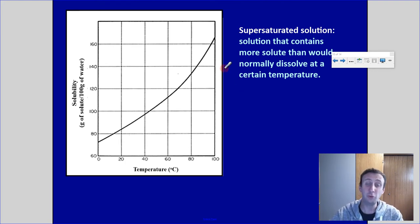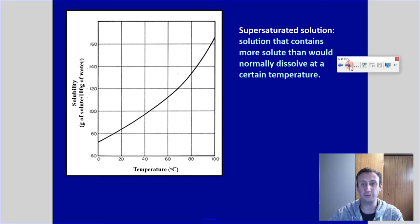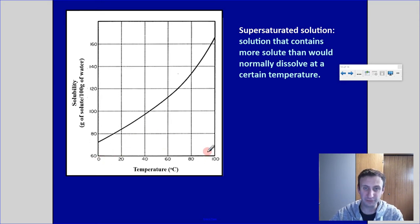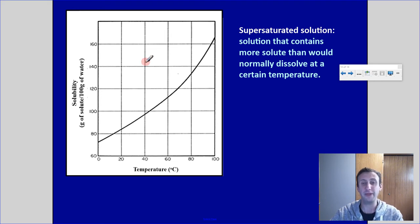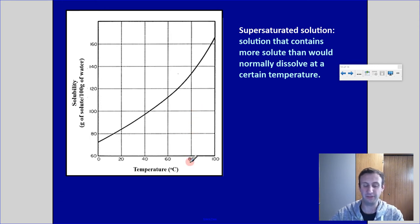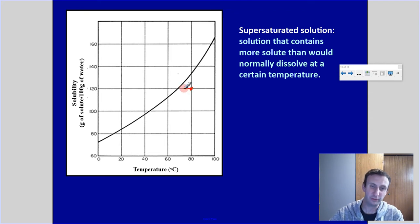A term we haven't talked about yet is supersaturated solutions. A supersaturated solution contains more solute than would normally dissolve at a certain temperature. To make one, I first heat it up to a higher temperature and dissolve as much as I can, then I carefully cool it down, making sure I don't get any impurities. The solute will sometimes stay in solution — it won't crystallize — but it stays in solution even though it shouldn't be able to have that much dissolved.